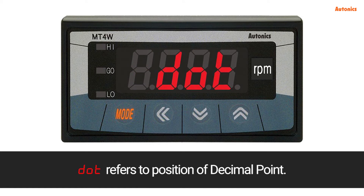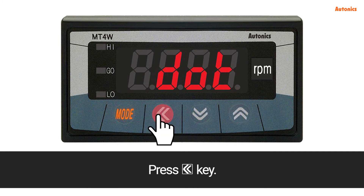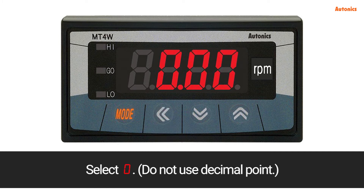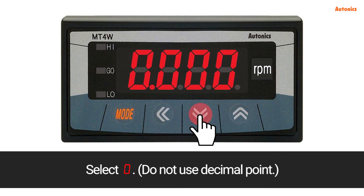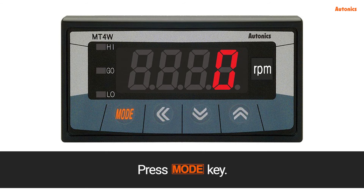Dot refers to the position of the decimal point. Press the left arrow key and select zero to not use a decimal point. Press the mode key.